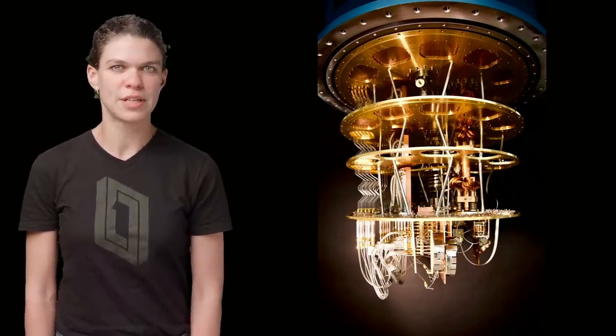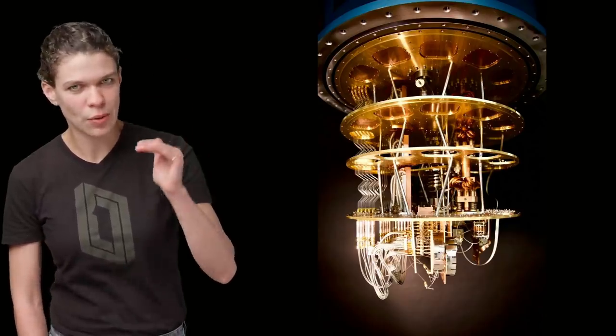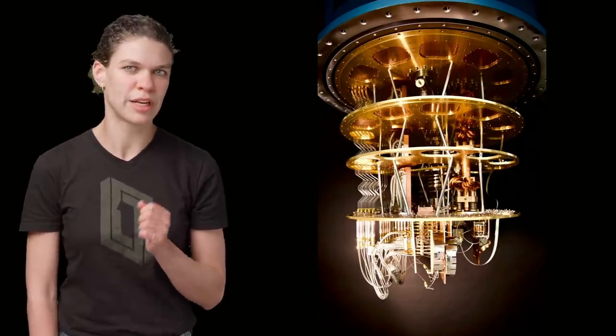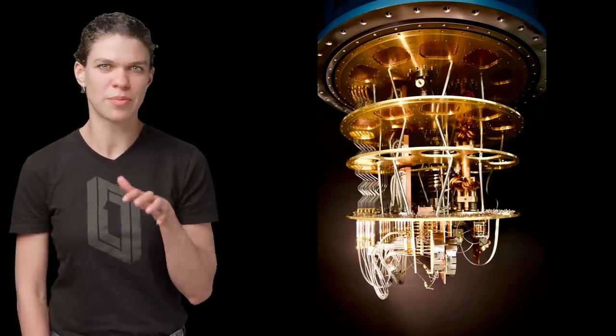The cryostat consists of a series of nested plates and cans. The warmest stage is at the top, and it gets colder as you go down. All the equipment in the central core of the cryostat is responsible for getting things cold. Our hardware is installed around the edges and on the bottom coldest plate.